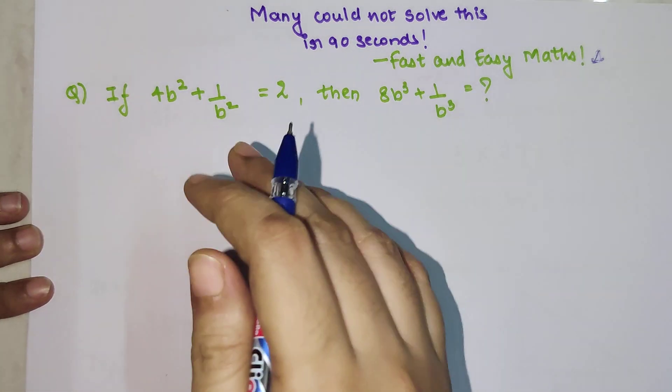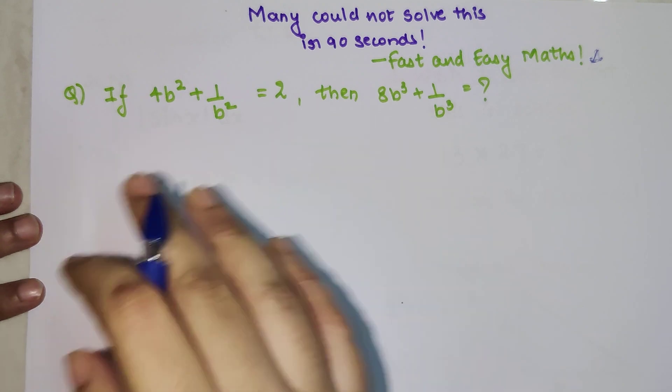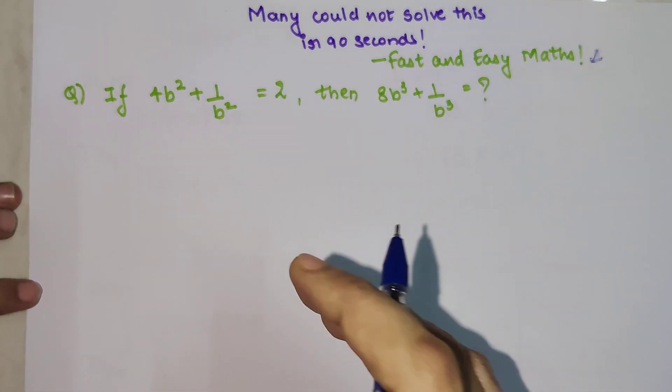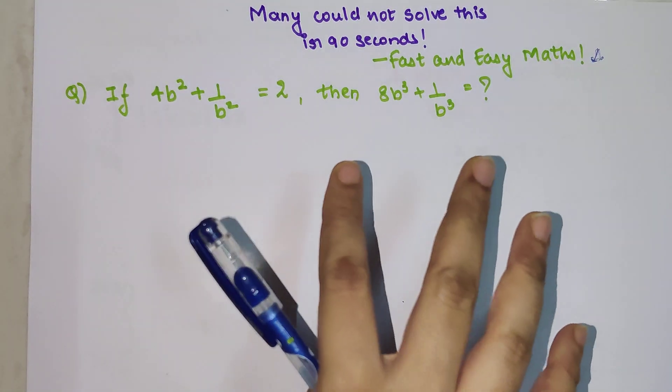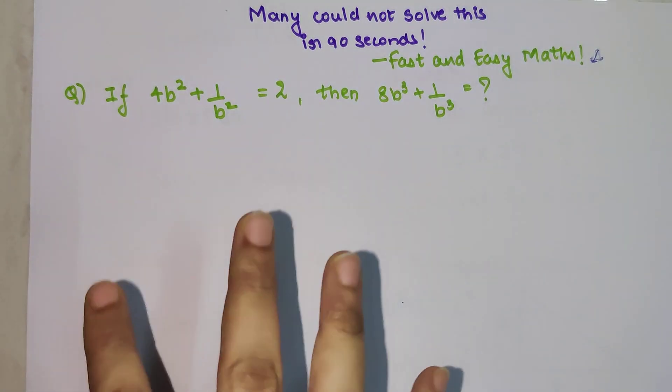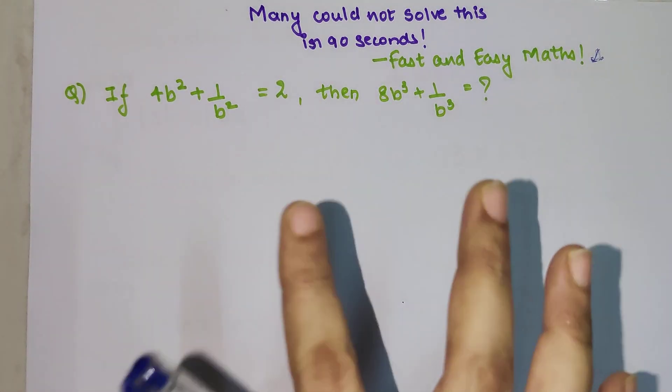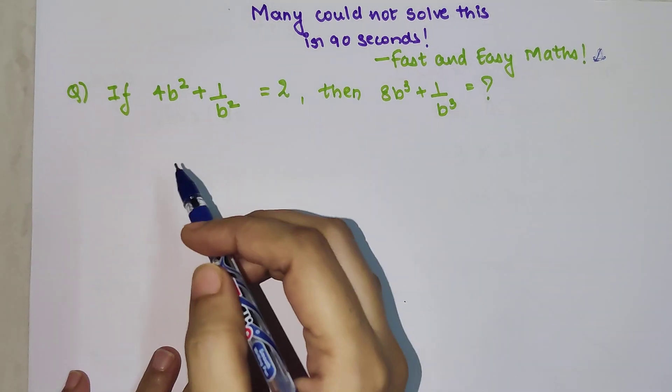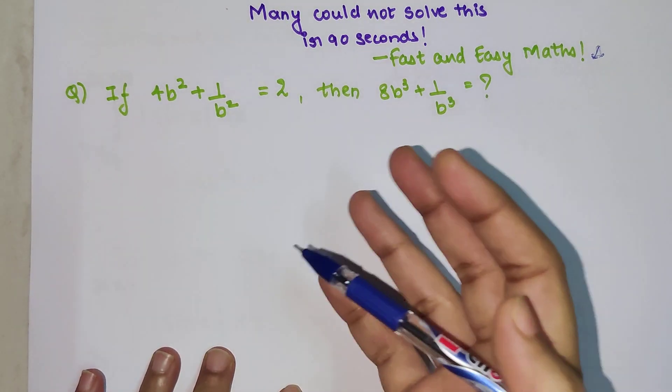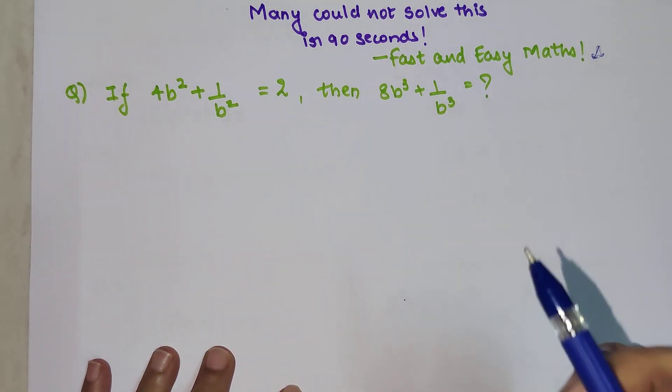Today I'm going to solve a question which was asked in one of these exams, and the time limit given to solve each of these questions was 90 seconds. So basically you had to solve this entire question in one and a half minutes and many students could not do it. The reason being the given data is a little bit different than what is normally expected for these kinds of questions.